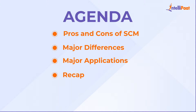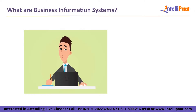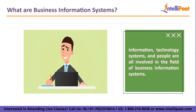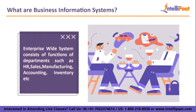Business information systems involve information technology systems and people. The tools, techniques, and concepts of several disciplines are used in this applied managerial profession to find solutions to a variety of business problems. The business information system is further divided into transaction processing systems, management information systems, and enterprise-wide systems. The enterprise-wide system covers functions of departments such as HR, sales, manufacturing, accounting, and inventory.